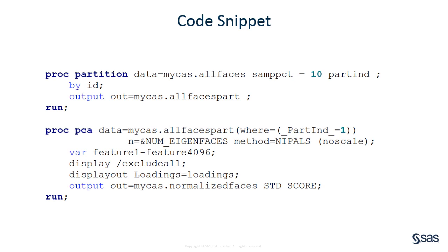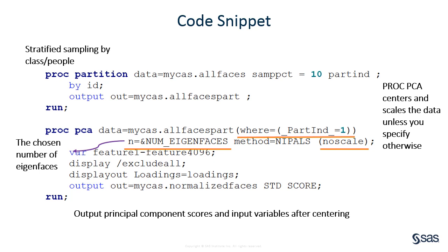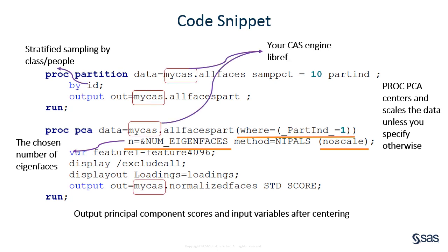Here is a code snippet. We first do a stratified sampling by person ID to partition the data into train and test sets, as described earlier. Then we do principal component analysis on the train set. The _PART_IND_ indicator is created from the partitioning step. PROC PCA centers and scales the data by default; data centering essentially subtracts the mean, but we do not need scaling in this application. N is the chosen number of eigenfaces. The output statement generates a new table which contains principal component weights and the centered values of original inputs. My CAS library refers to the folder on the CAS engine where your data file is located. For more information on how to set up a CAS server or VDMML procedures, please contact support.sas.com.